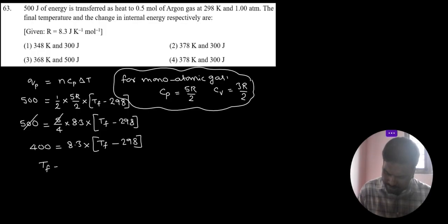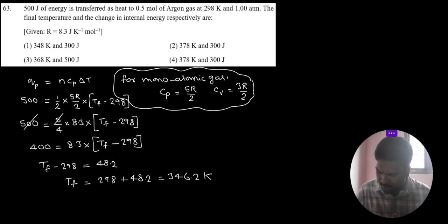Now Tf minus 298 Kelvin is equal to 400 by 8.3, 48.2. Final temperature is equal to 298 plus 48.2. What is that value? 346.2 Kelvin.